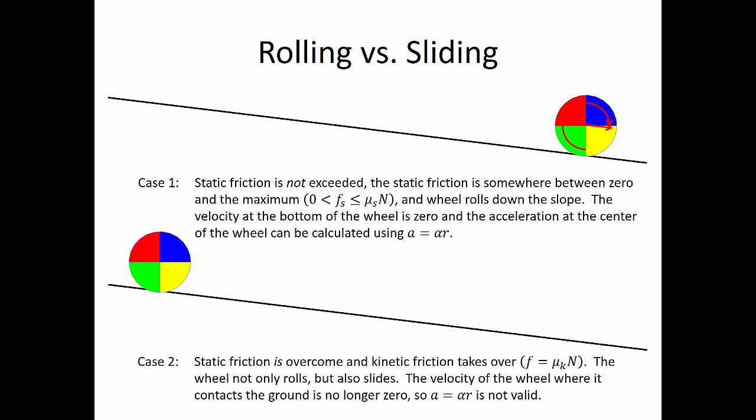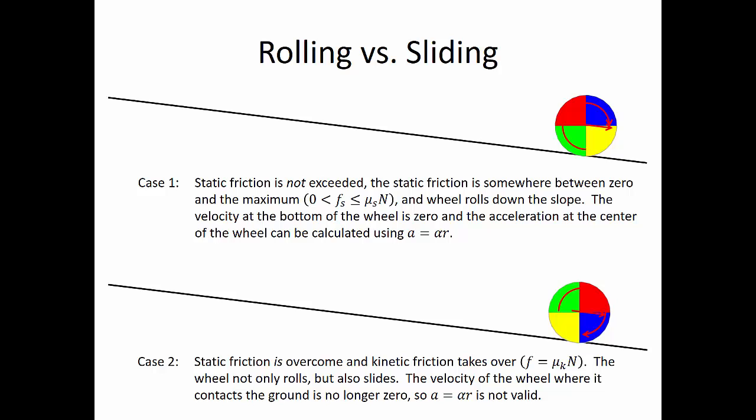In the second case, static friction is overcome and kinetic friction takes over. In this case, our friction is exactly equal to our coefficient of kinetic friction times the normal force. The wheel not only rolls but also slides. The velocity of the wheel where it contacts the ground is no longer zero, so our acceleration at the center of the object is not equal to our angular acceleration times the radius measured from the bottom of the object to the center of gravity.